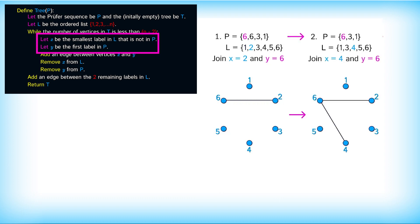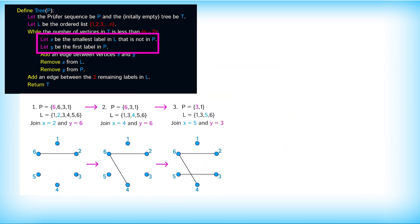We're going to join edges 2 and 6 in our tree. Then we remove those x and y and again look for the smallest number in l that's not in p. Now that's going to be 4. So we join 4 and 6 to get another edge in our tree.